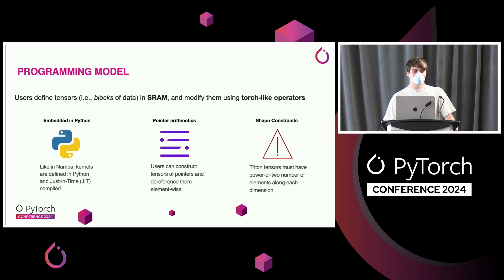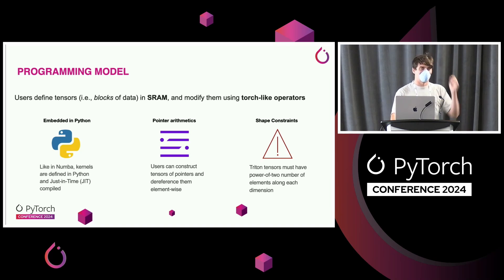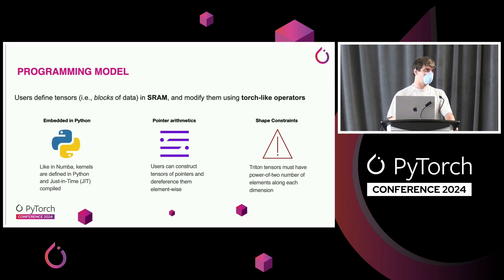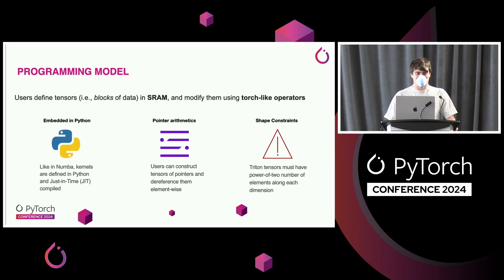Briefly, what is Triton? One way to think about it is it's very similar to Torch, except that your tensors are living in the SRAM of your hardware. You can still modify them like you'd modify Torch operators. Whenever you have a Triton tensor in your program, you can be pretty much guaranteed that accessing it and doing operations on it will be very fast, because it will already be living locally on your chip.